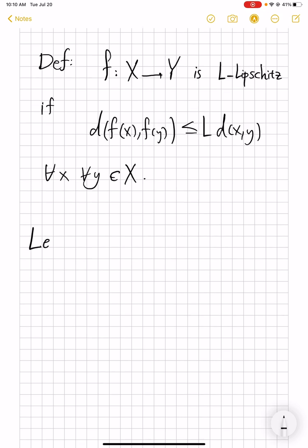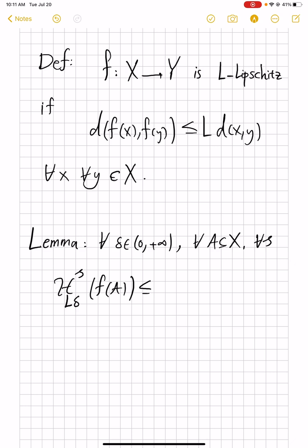The lemma is that for every delta positive and not infinity, and for every subset A of X, the Hausdorff content of L delta of f(A), assuming L is positive to avoid technicalities, is less than or equal to L to power S times the Hausdorff content delta of the set A.